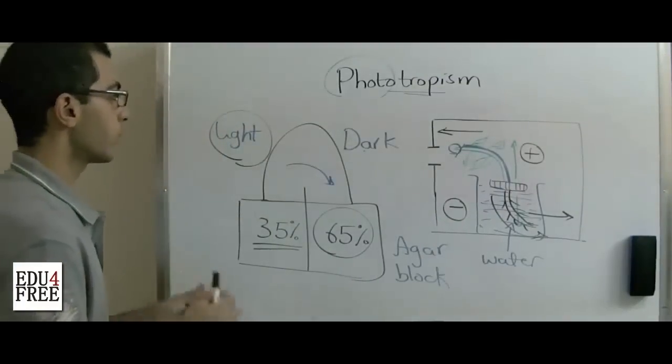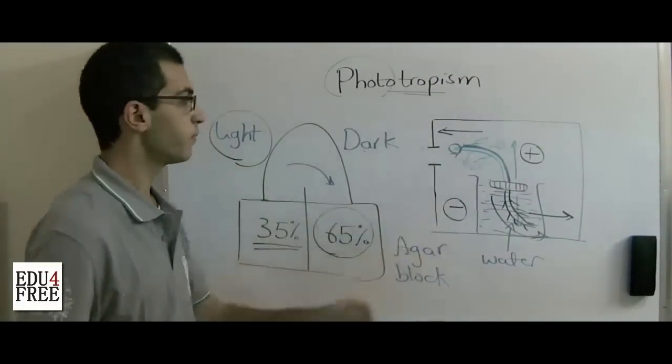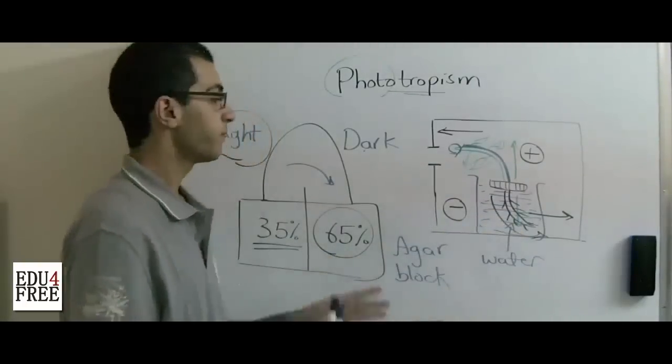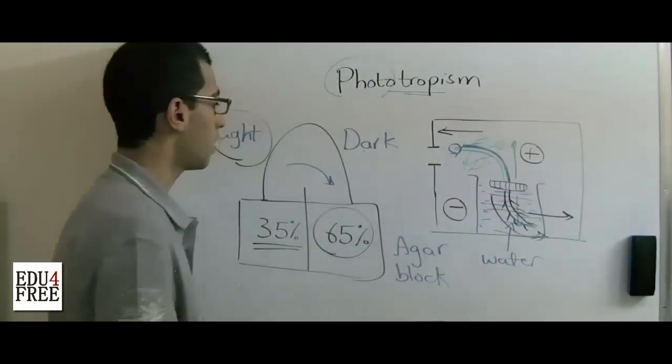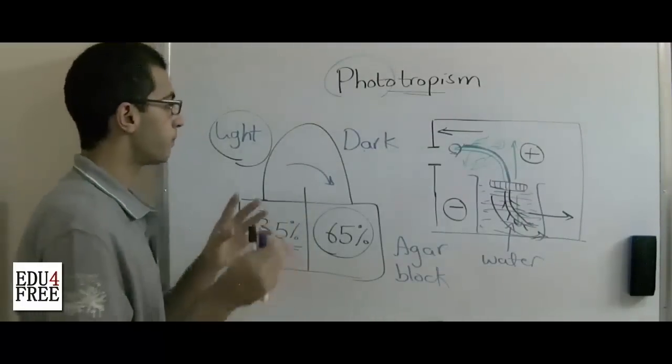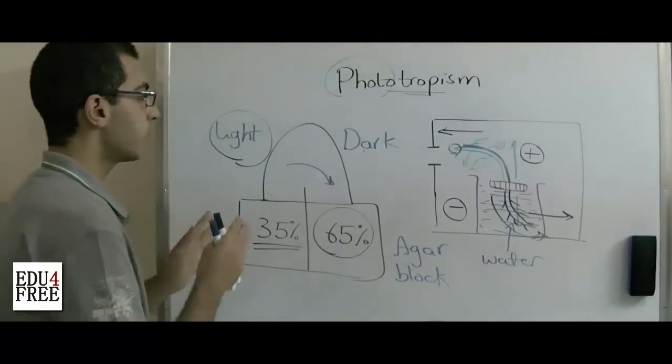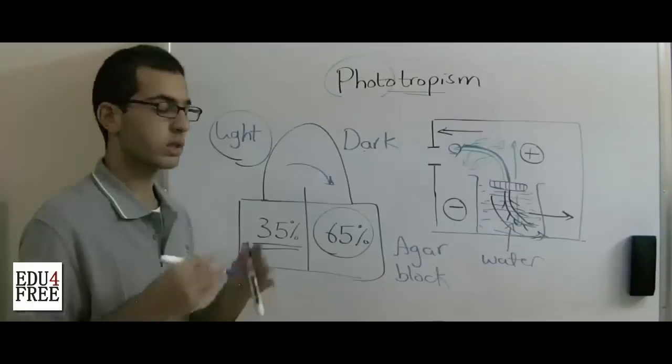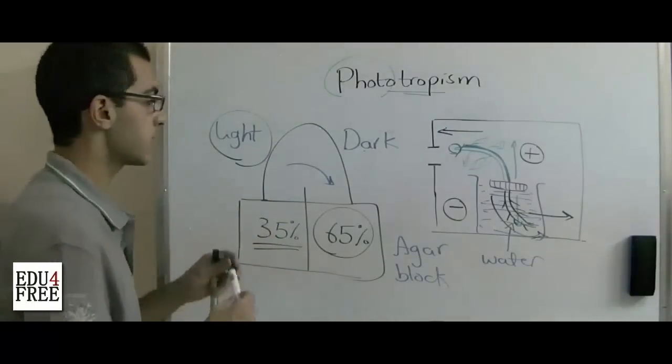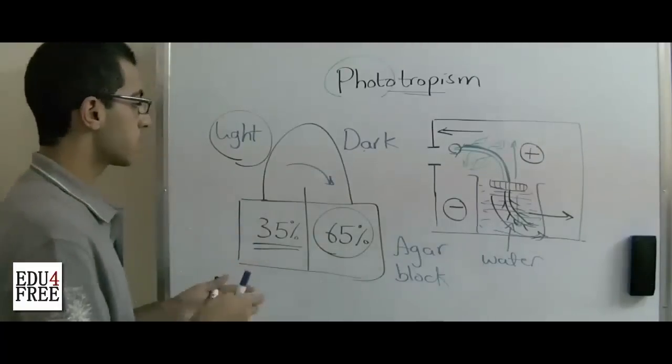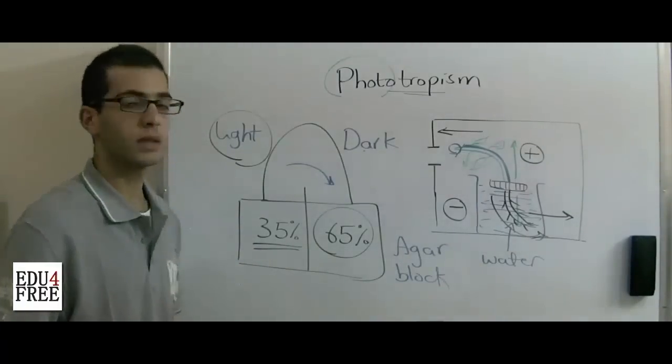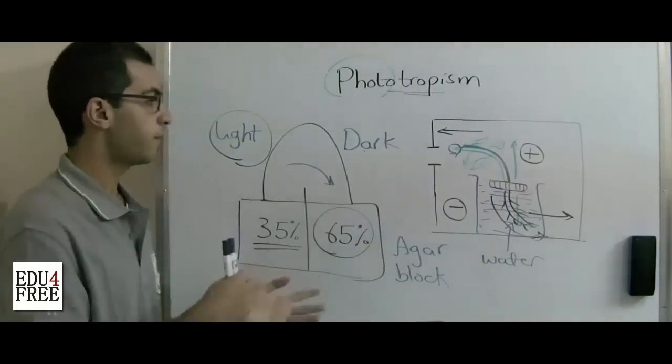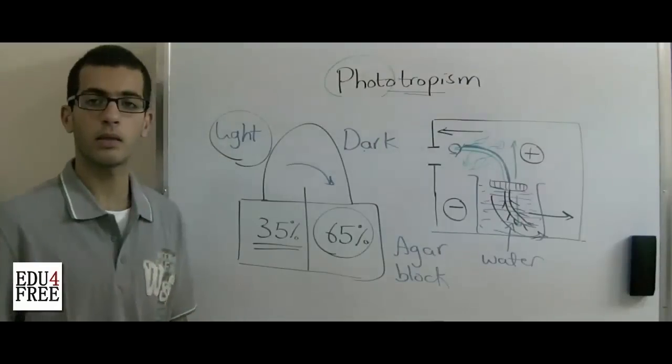So that was phototropism. The stem is positive phototropic because it bends towards the direction of light, while the root is negative phototropic because it bends away from the direction of light. Tropism is made by auxins. Auxins are considered as plant hormones, and the most important example of auxins is the indole acetic acid. So this is it for today, and next time we will talk about geotropism, the tropism which occurs due to the effect of gravity on the plant. Until then, I thank you for watching.